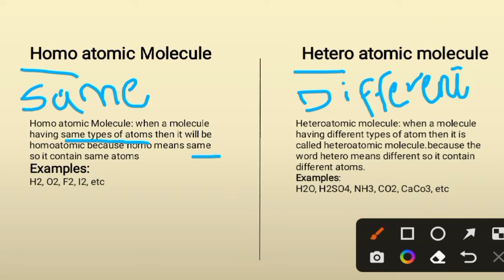A heteroatomic molecule is when a molecule has different types of atoms. It is called a heteroatomic molecule because the word hetero means different, so it contains different atoms. That is the main difference: homo contains same atoms and hetero contains different atoms.